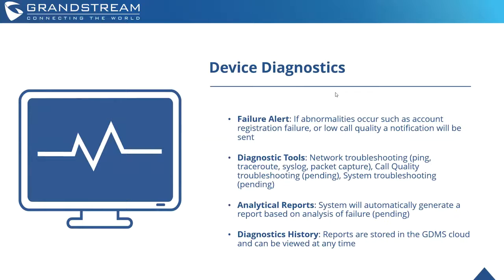There's a diagnosis tool to basically help troubleshoot all of these issues from ping, trace routes, system logs, and packet captures. Call quality troubleshooting and system troubleshooting are two pending features that should be available on a later release/upgrade of the GDMS system. An analytic report is pending as well, and all these diagnostic reports are stored in the GDMS cloud and can be viewed at any time.